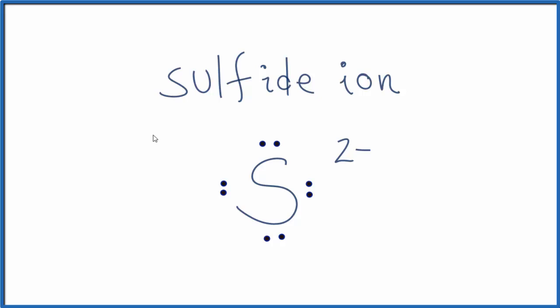When we do that, we have eight valence electrons around the sulfur. That's a very stable arrangement. We call that an octet, and that's why sulfur forms this 2 minus charge when it forms an ion.